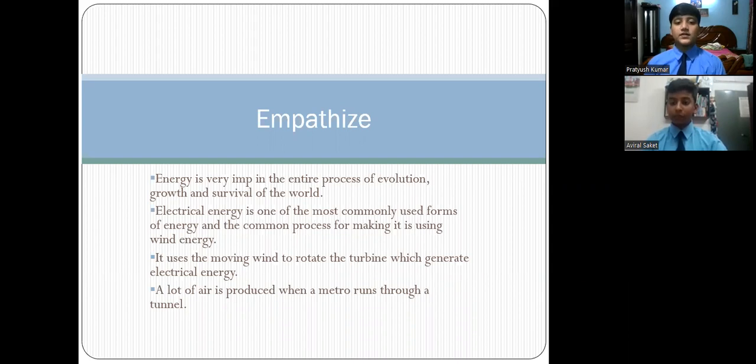As you all know, energy is very important in the entire process of evolution, growth and survival of the world. Electrical energy is one of the most commonly used forms of energy and the common process for making it is using wind energy. It uses the moving wind to rotate the turbine which generates electrical energy.